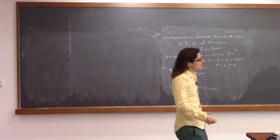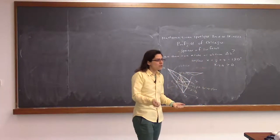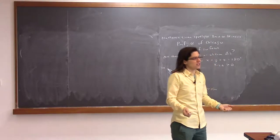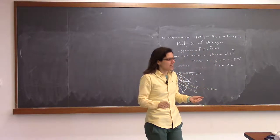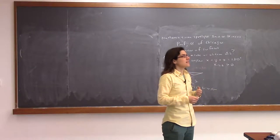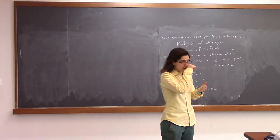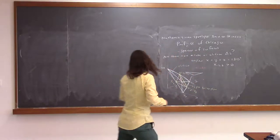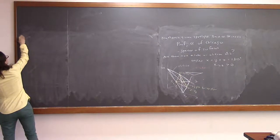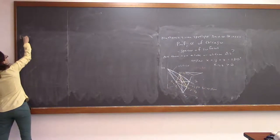The last couple of times we've been talking about change of variables — to polar coordinates and then last time a change of variables in general. Today we'll finish that by talking about integrating in different variables: 3D integrals in cylindrical and spherical coordinates. The first thing we'll do is one more example of a change of variables.